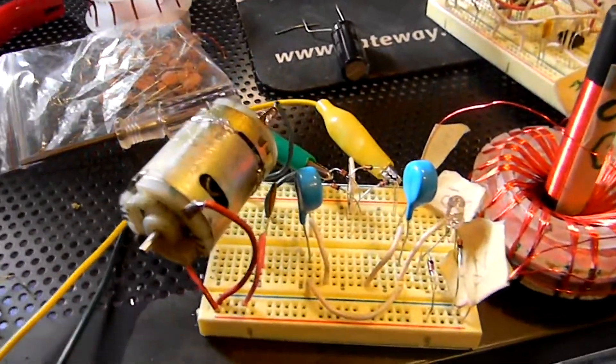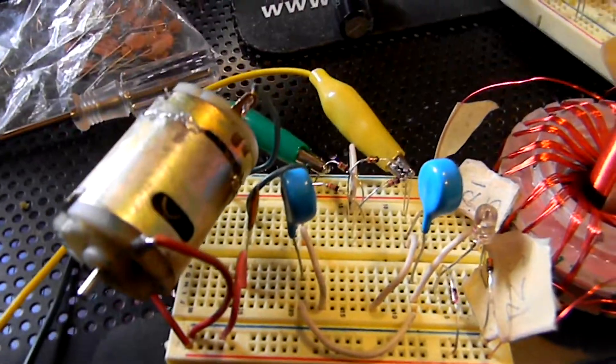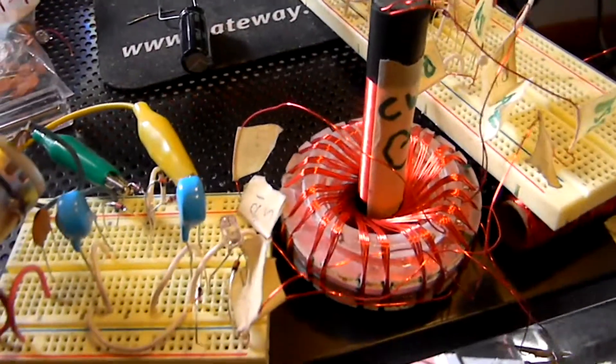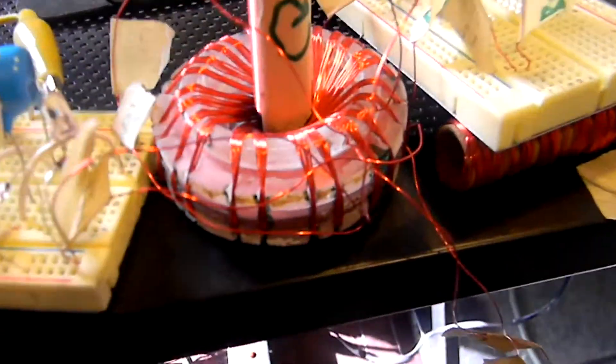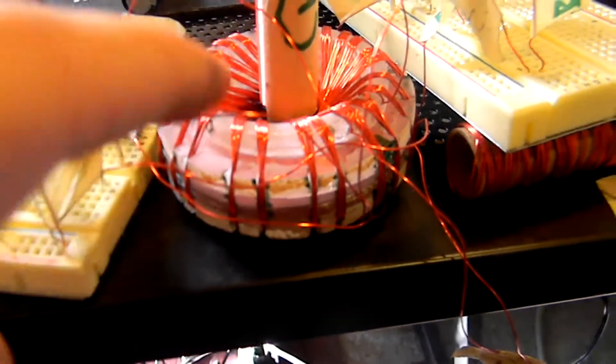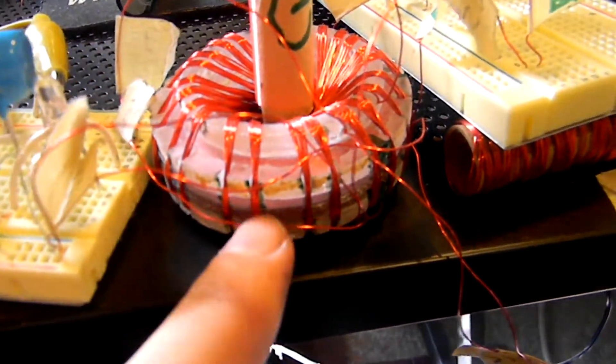Alright, so here's my asymmetrical motor. I hooked it up to a circuit. Again, there's a pancake coil in the middle of this vortex coil. It's right in here.